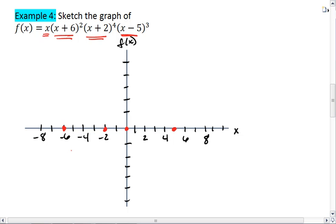And at negative 6, because it's an even power, we're going to bounce. Negative 2, we're going to bounce. 0, we're going to cross, because it's just x to the first power. And at positive 5, we're going to cross, because it's x minus 5 cubed. So we have even multiplicity, even multiplicity, odd multiplicity, odd multiplicity.